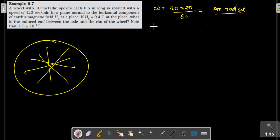Now, we can see the magnetic field B is equal to 0.4 gauss at a place. What is the induced EMF between the axle and the rim of the wheel?